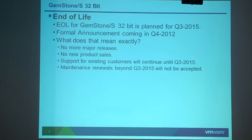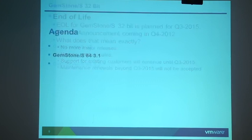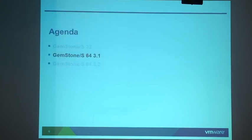What does this really mean for these customers? It means they'll have three years of support left to move to GemStone 64 before we stop accepting maintenance renewals and help requests in 2015. So we're trying to give people lots of room to move over.